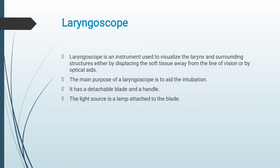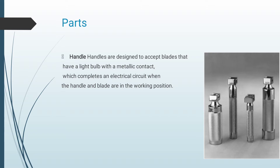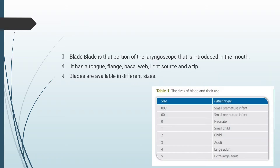Moving on to laryngoscope. A laryngoscope is an instrument used to visualize the larynx and surrounding structures either by displacing the soft tissue away from the line of vision or by optical aids. The main purpose is to aid intubation. It has a detachable blade and a handle. The light source is a lamp attached to the blade. Handles are designed to accept blades that have a light bulb with a metallic contact, which completes an electric circuit when the handle and blade are in working position.